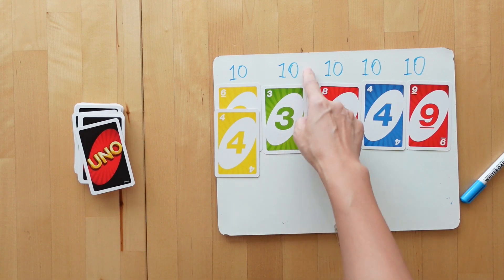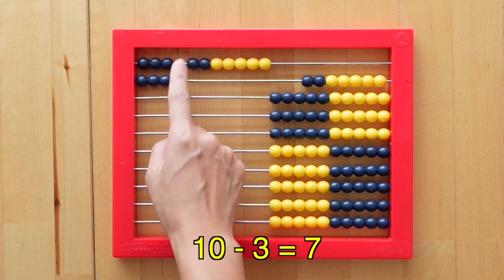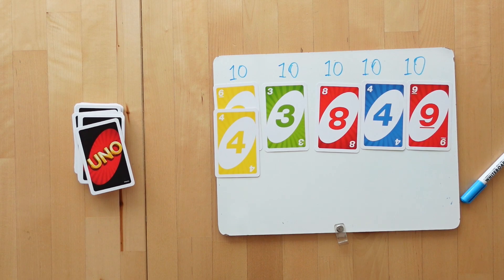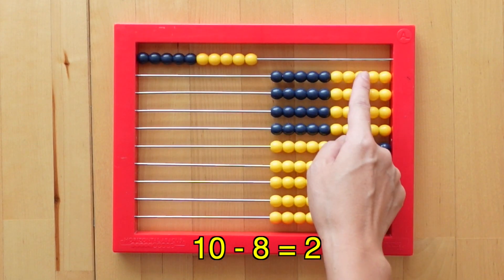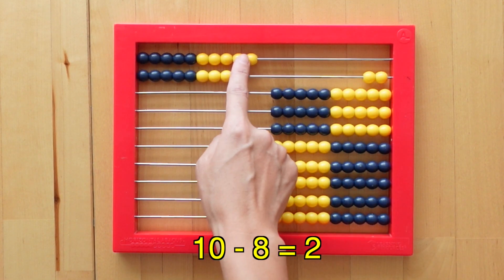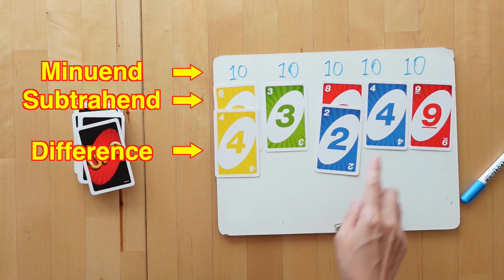The next one is 3 and the difference between 10 and 3 as we can see here is 7. Now I don't have a 7 so we move on to the next column. For this one, the difference between 10 and 8 is 2 and I have that card so we can place it here.